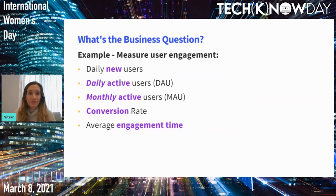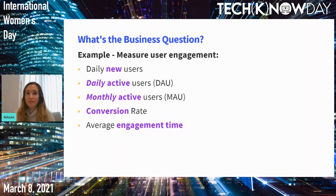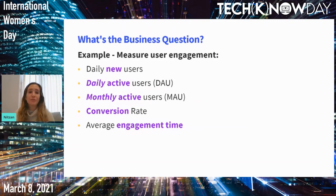Besides the requirements themselves, it's important to understand the definitions. For example, what is an active user? Is it the user who only has an account, or is it the user who logged in at a specific frequency? Conversion rate — what is the user who converted? Is it the user who completed the onboarding, is it the user who clicked, or is it the user who made a purchase? All of these definitions may vary from company to company, from product to product, and sometimes even people who work on the same product within the same company may have different perspectives. It's important to make sure that everyone is on the same page.